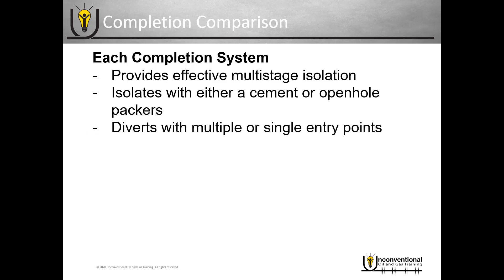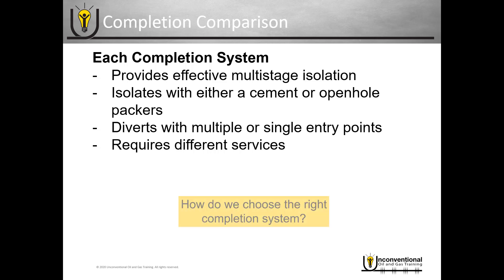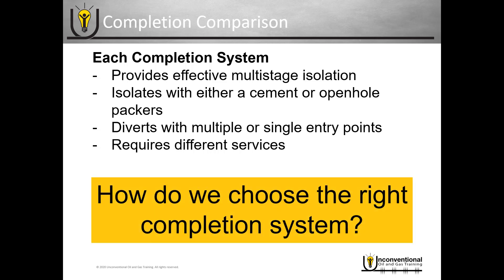You can also divert with multiple or single entry points. You can do single-entry plug-and-perf, and you can also do multiple entry with frack sleeves as well. That allows you the flexibility to do whatever completion strategy suits best for you. Now each of them does require different services, and that can play a big factor on the economics and the overall efficiency of each completion type. Considering all these factors, how do we choose the right completion system?